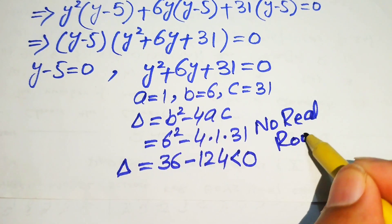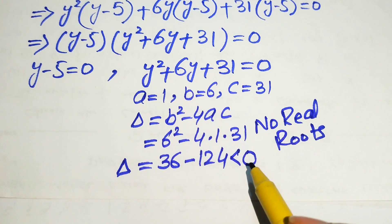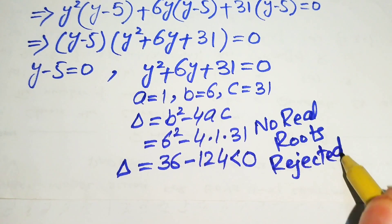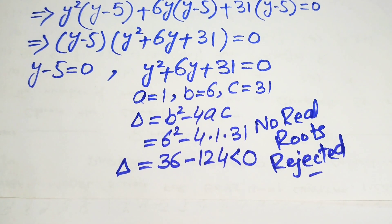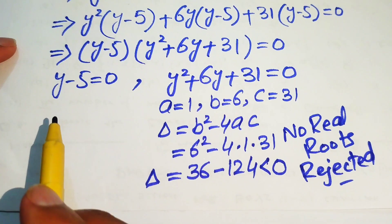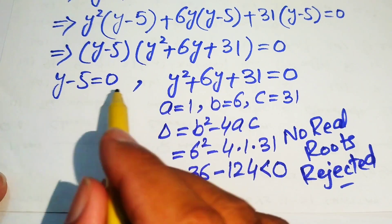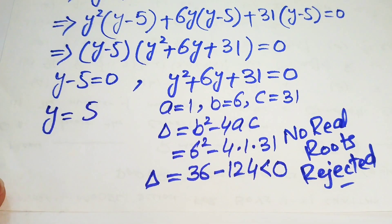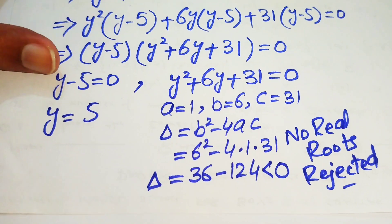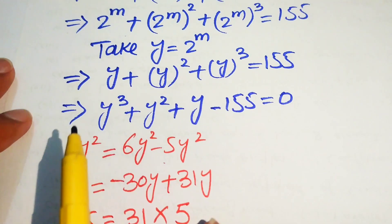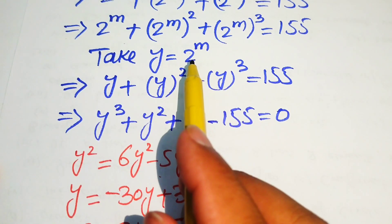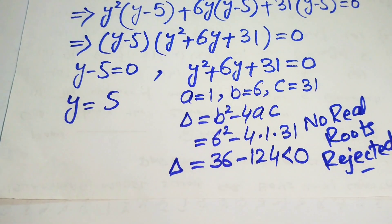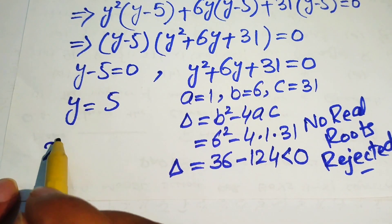Since the discriminant is less than 0, the quadratic equation has no real roots. We reject Case 2 and proceed with Case 1 only: y minus 5 equals 0, which gives y equals 5.